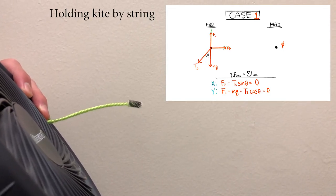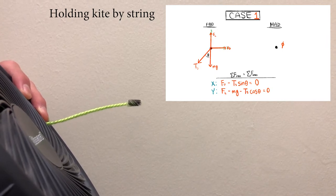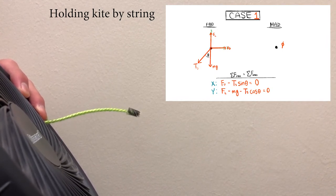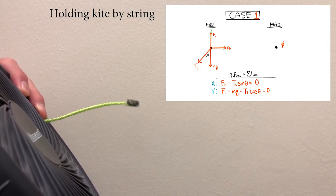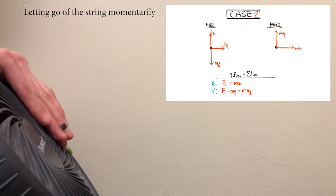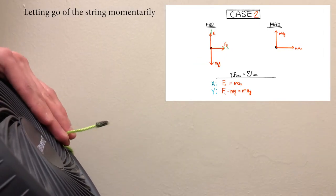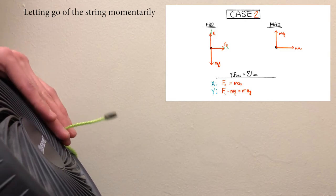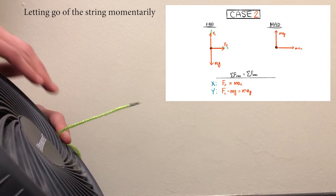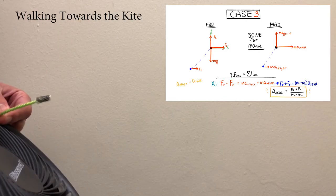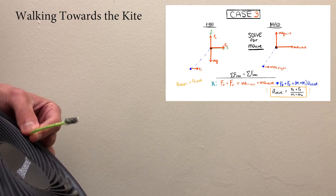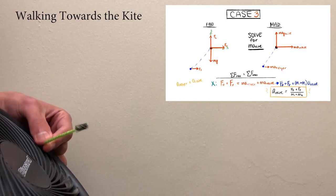Now for a real-life demonstration of all three cases. As shown in case one, a kite with four forces acting on it will stay almost balanced in mid-air. As shown in case two, releasing the string causes the kite to move up and away. As shown in case three, accelerating towards the kite will make the kite move away with the same acceleration.